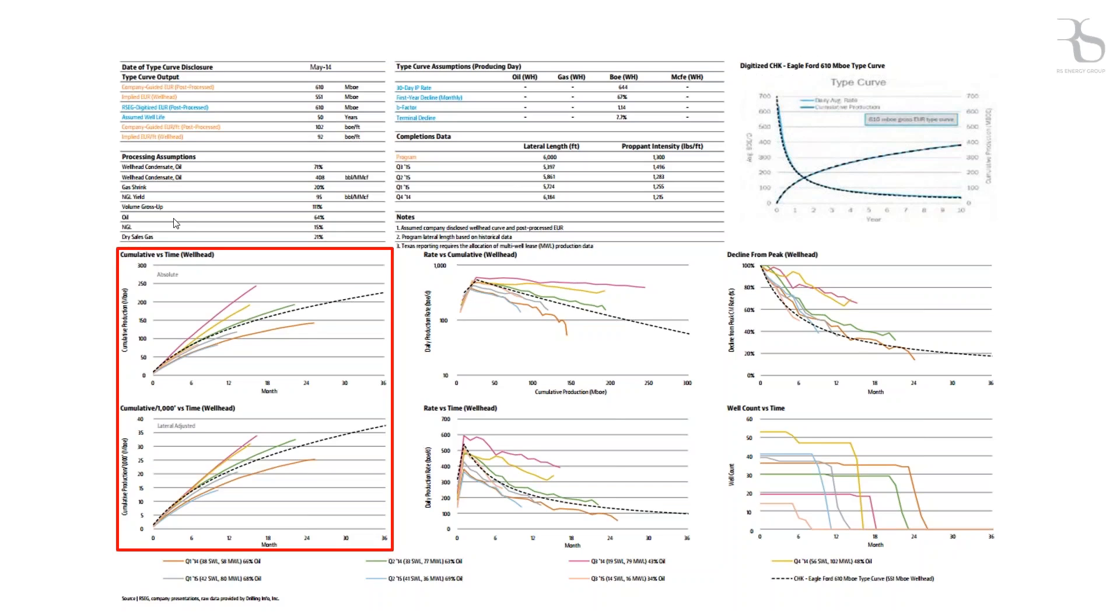The other one that I like to highlight is over here in the upper right-hand corner. It's the decline from peak, so it shows you the monthly decline from the peak month. And this here gives you a sense of what type of decline profile the data shows against the curve.